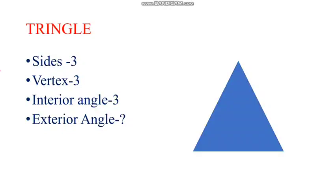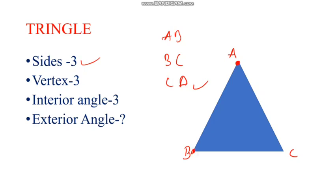The geometry part is the triangle. This is a triangle. Consider this is A, B, C. The triangle has three sides. A, B, C. The vertex — there are three vertices: one, two, three. The interior angle.